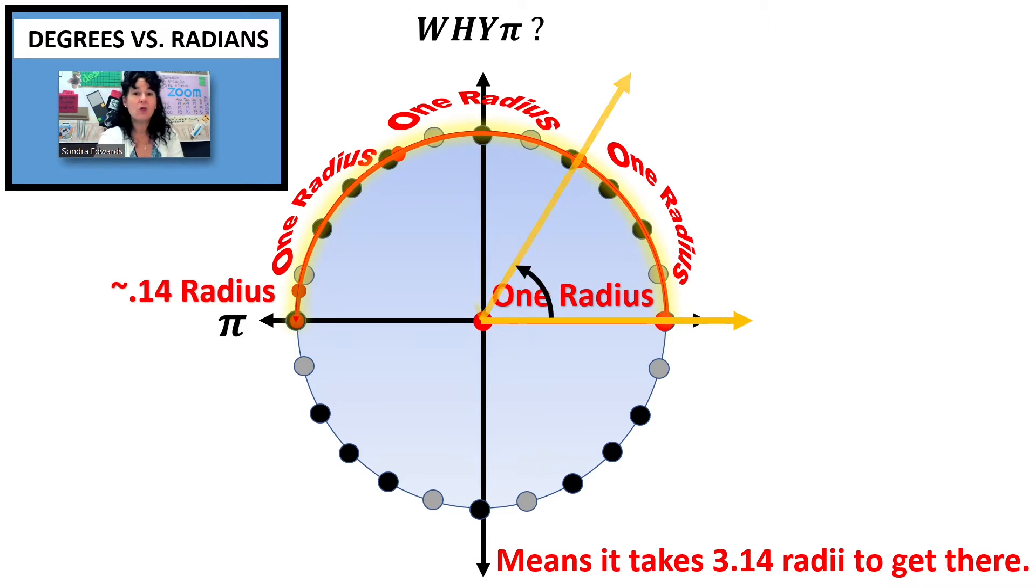If I go over another radius, then this angle measure here would be two radians, which is slightly less than 120 degrees.